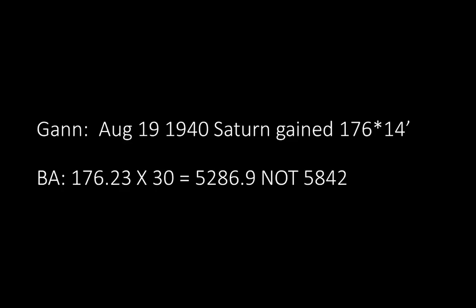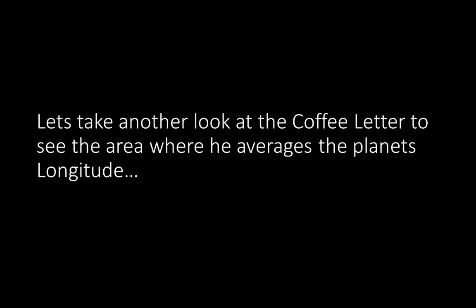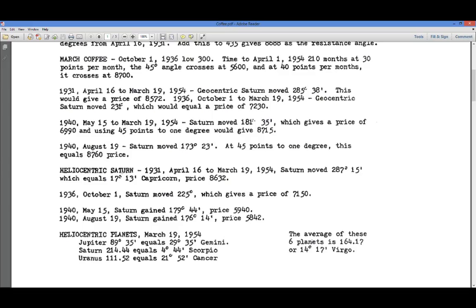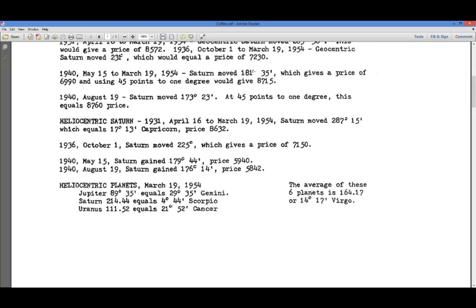He never mentions the scale of 30 in that letter. Let's take another look at the coffee letter to see the area where he averages the planet's longitude — this is going to be important. We did this area: heliocentric Saturn — that's why we're using the scale of 30. Now we've moved down to heliocentric planets.